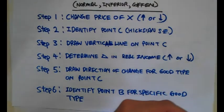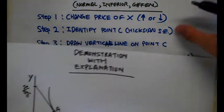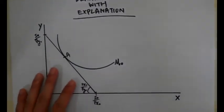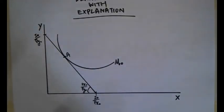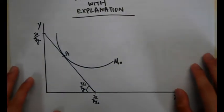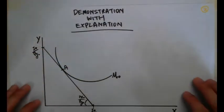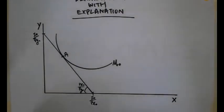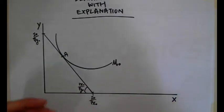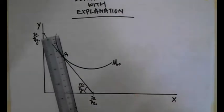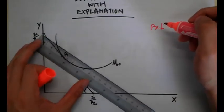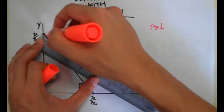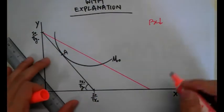Let's put this into practice. I'll be uploading a picture of this so you can download it. This is a demonstration with explanation. This is my standard setup — the initial equilibrium for consumer theory. We are going to decrease the price of X, so the budget line is going to rotate outwards. You should be very proficient in this.